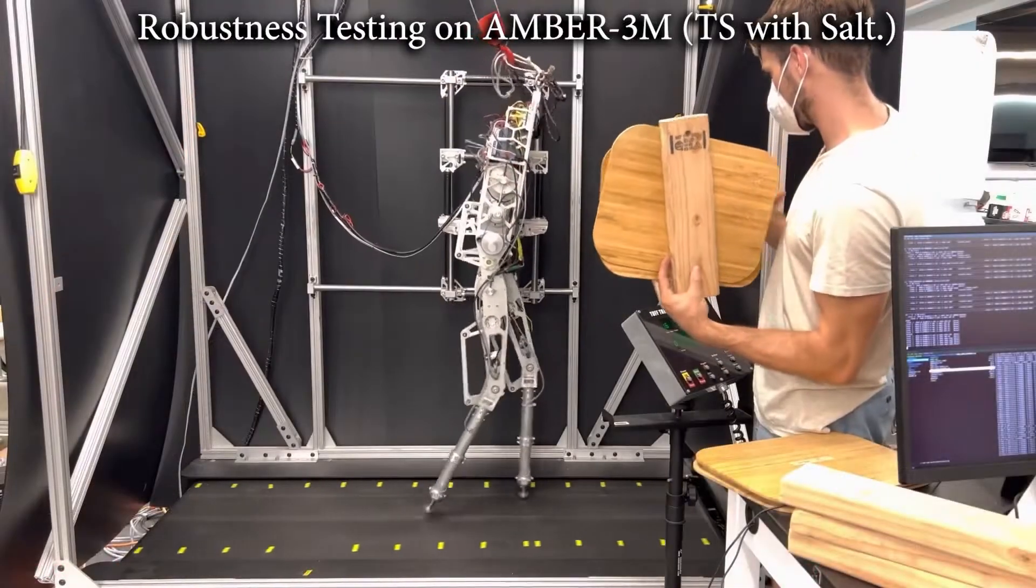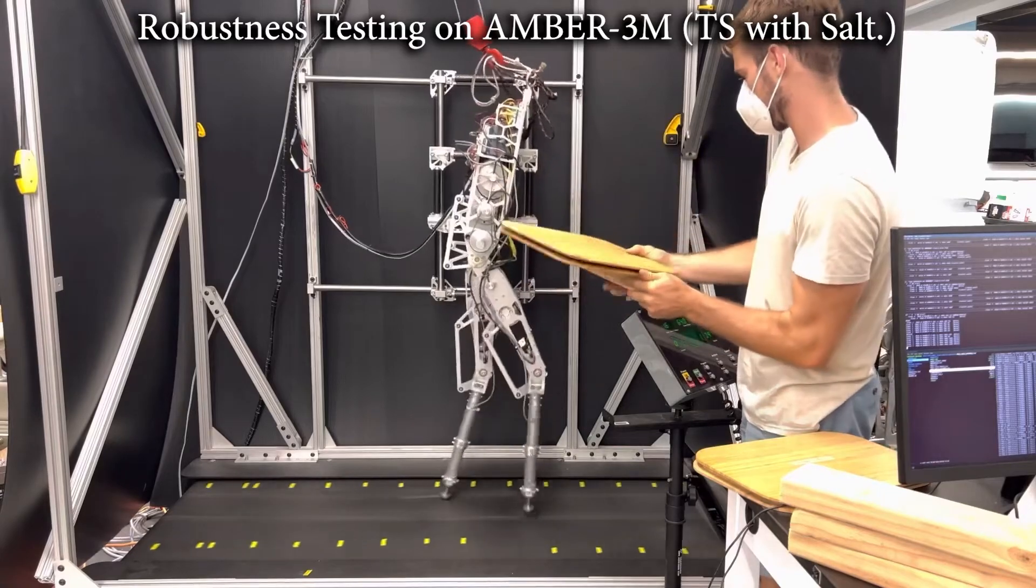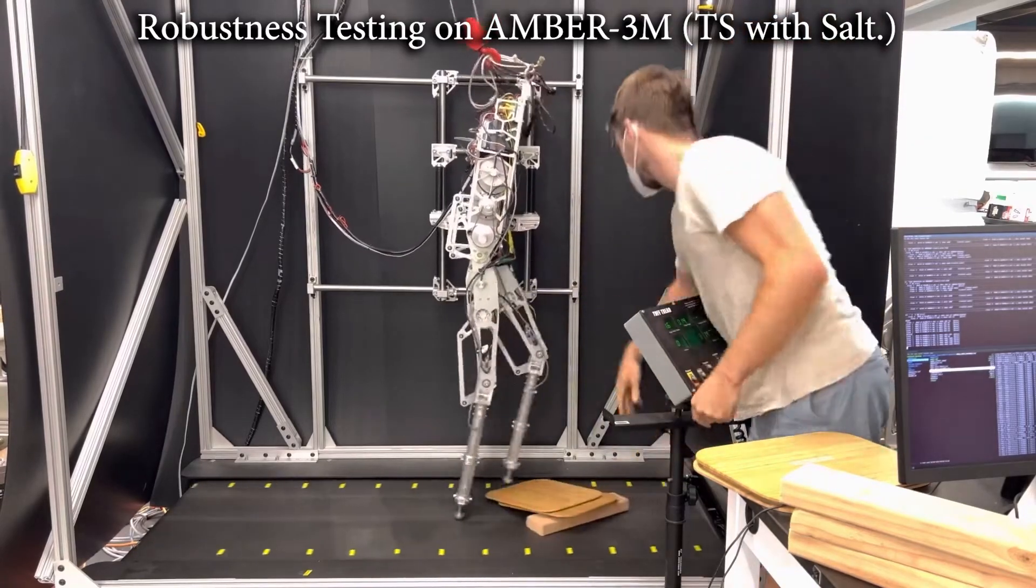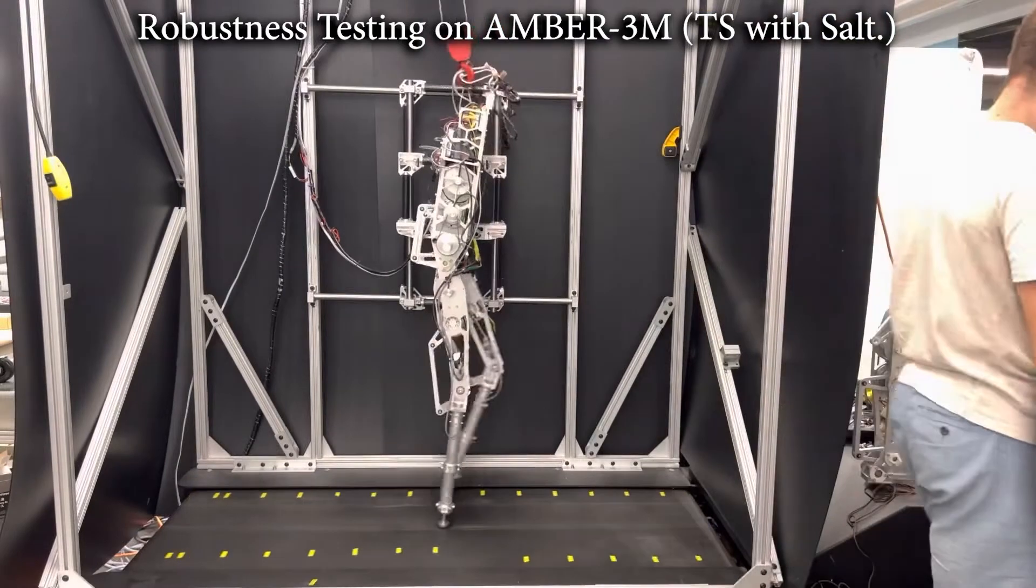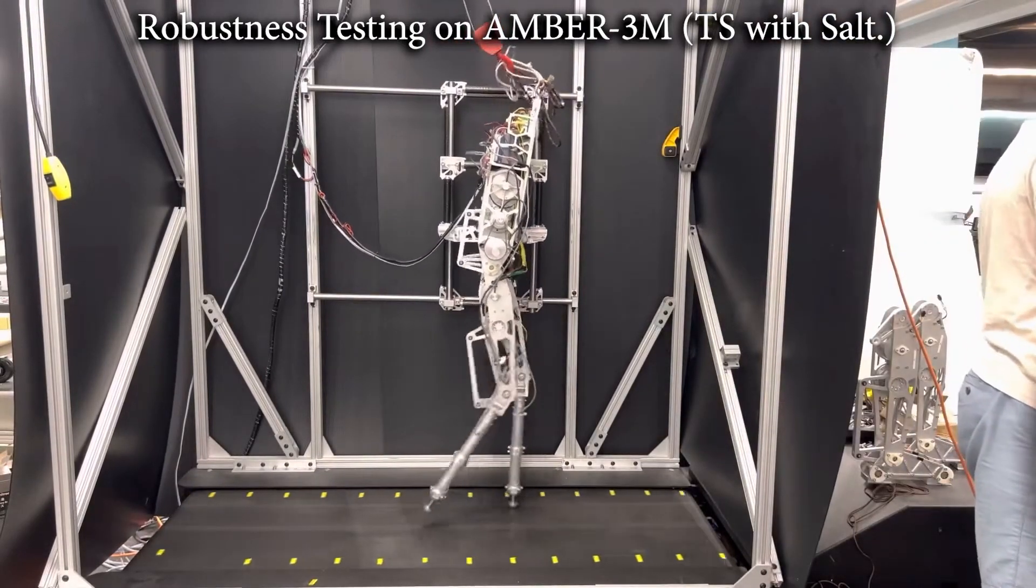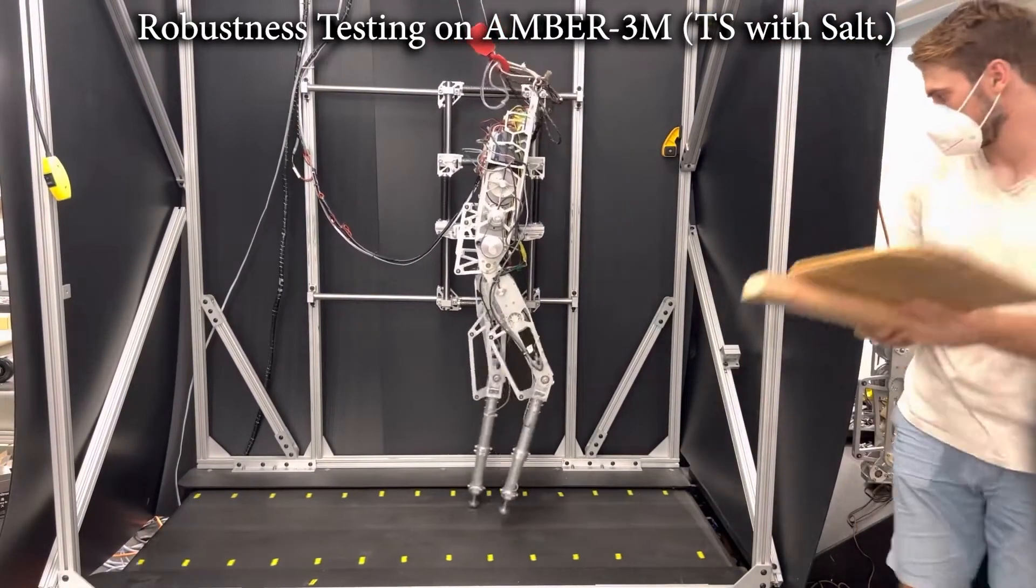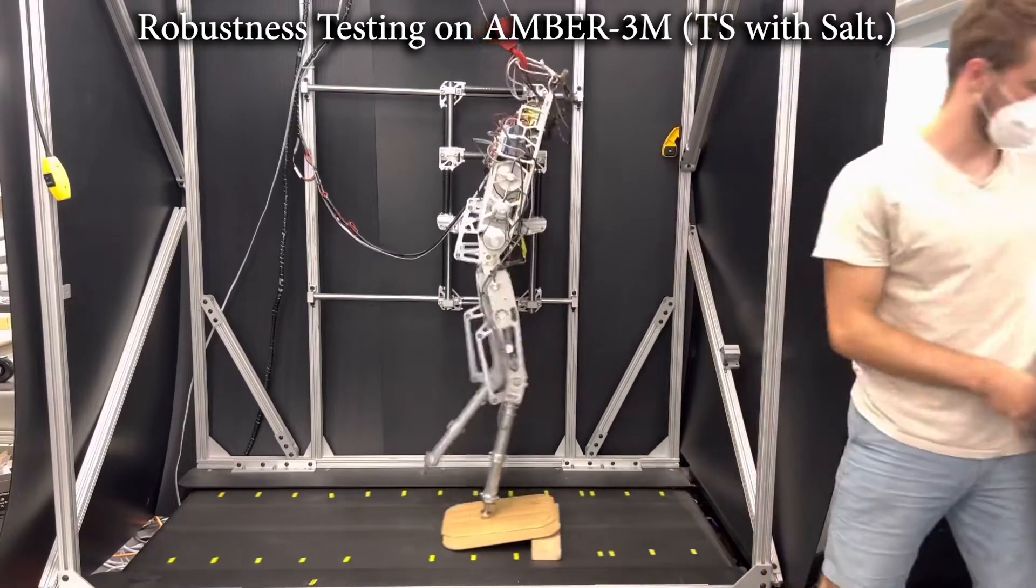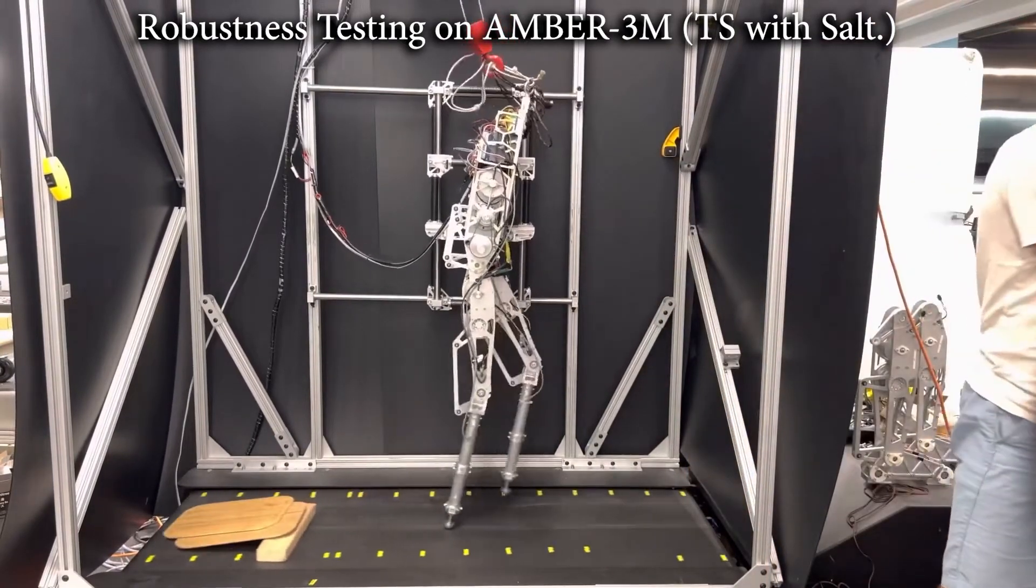Finally, to demonstrate the robustness of the gait generated with both cost function terms, additional robustness tests were deployed. On AMBER, the test consisted of placing random objects on the ground. As shown, the gait generated with both cost function terms is robust to these uncertain impact events.